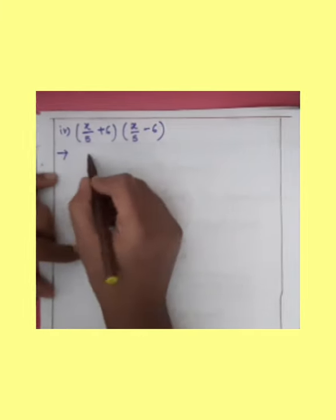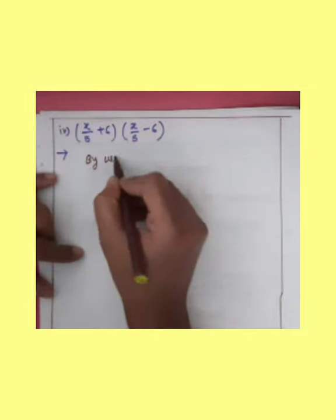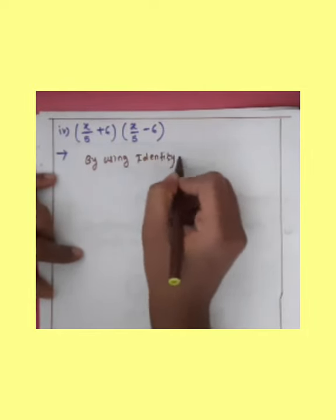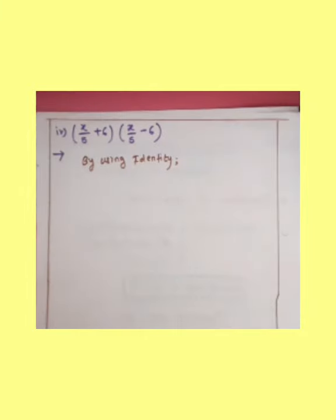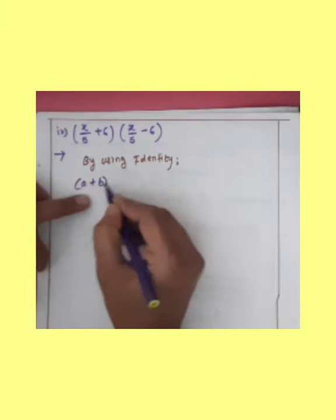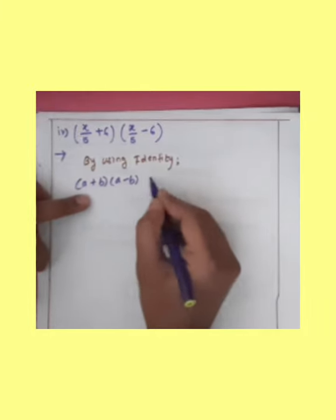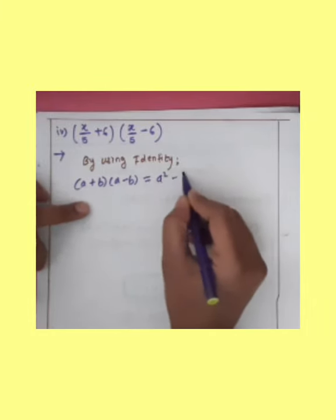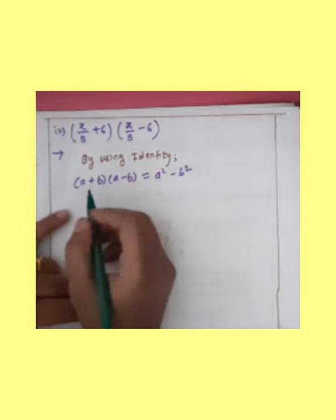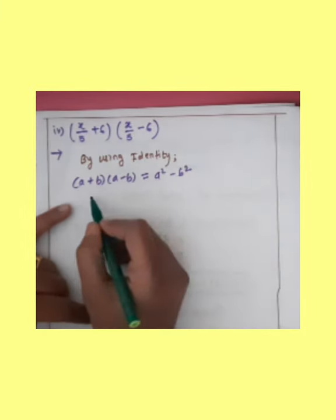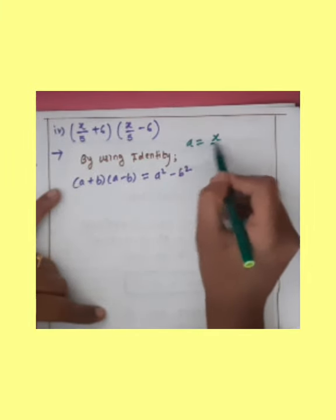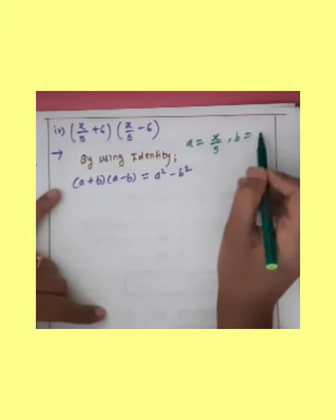A plus B — by using identity: A plus B into another bracket A minus B is equal to A square minus B square. Here A is equal to — what value? — X upon 5, and B is equal to 6.